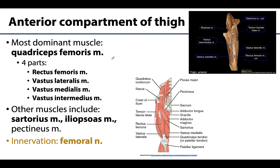The dominant muscle in this compartment and really in the thigh overall is the quadriceps femoris muscle. As its name suggests, it has four parts often considered as four separate muscles, even though they all share a common distal tendon. One of these four, the rectus femoris, spans a longer distance, crossing both the hip and knee joint, running straight down the middle of the anterior thigh — hence its name.